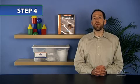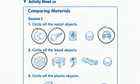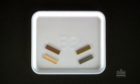Next, distribute a copy of Activity Sheet 12 to each student and have them complete steps 1 through 3. To conclude session 1, lead a discussion about different kinds of things that are made of metal, things that are made of wood and plastic, and what these things are used for.